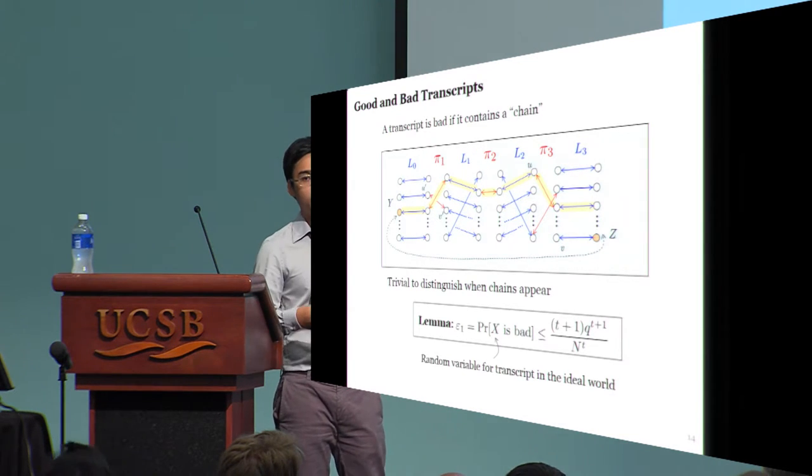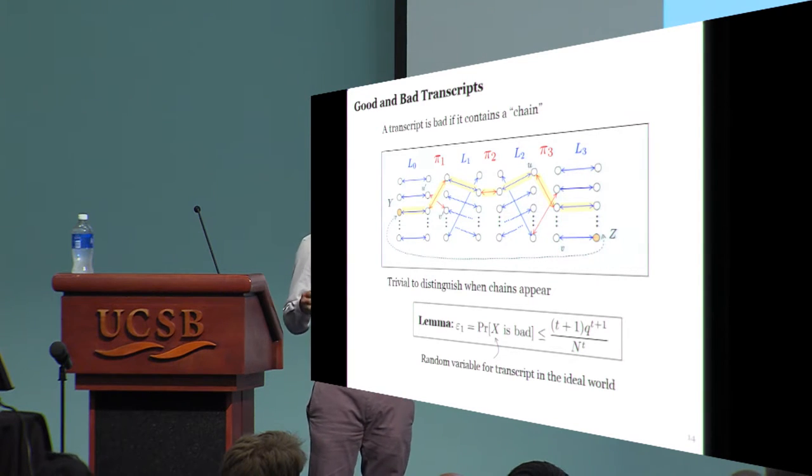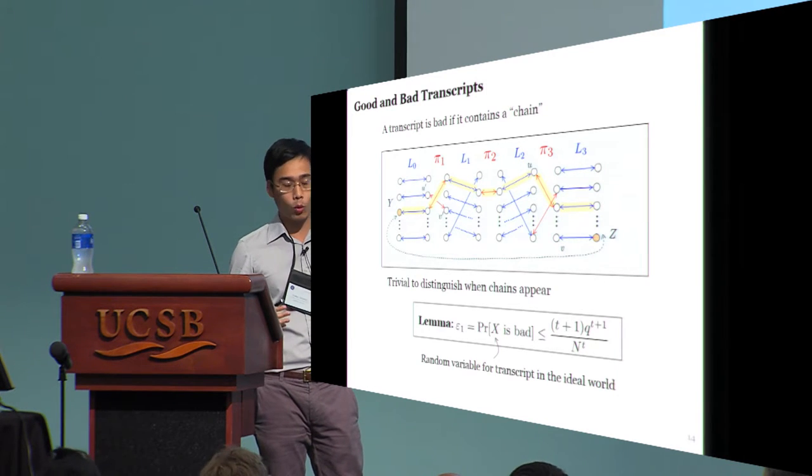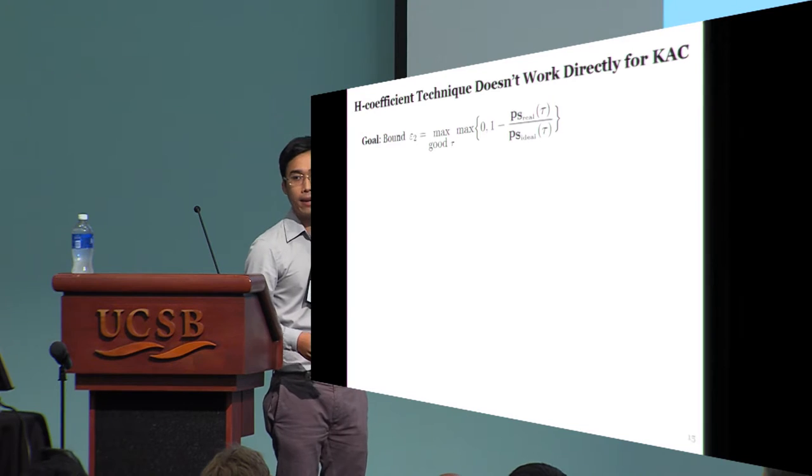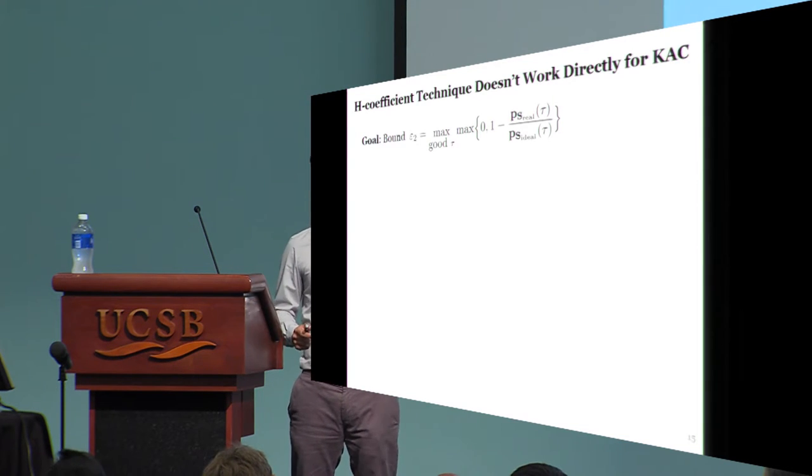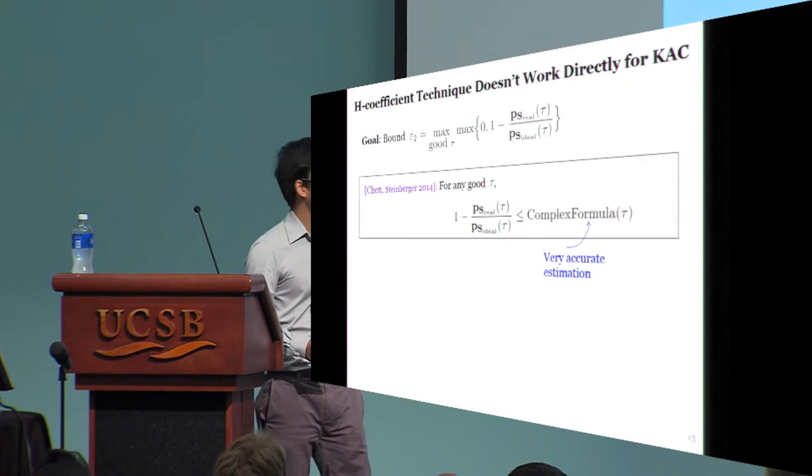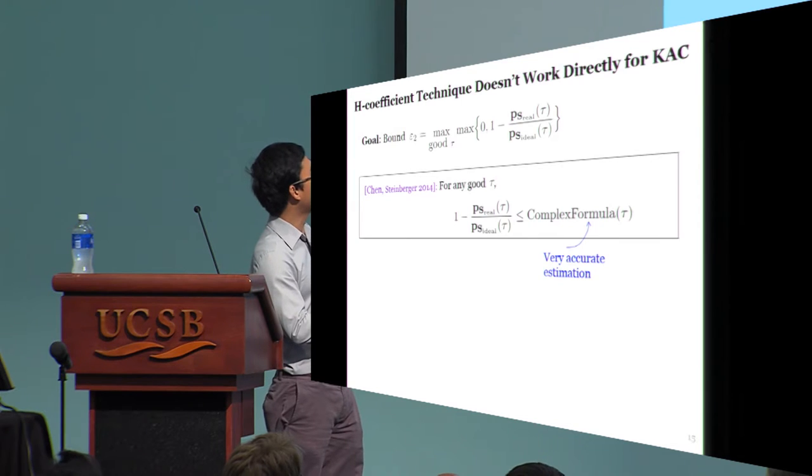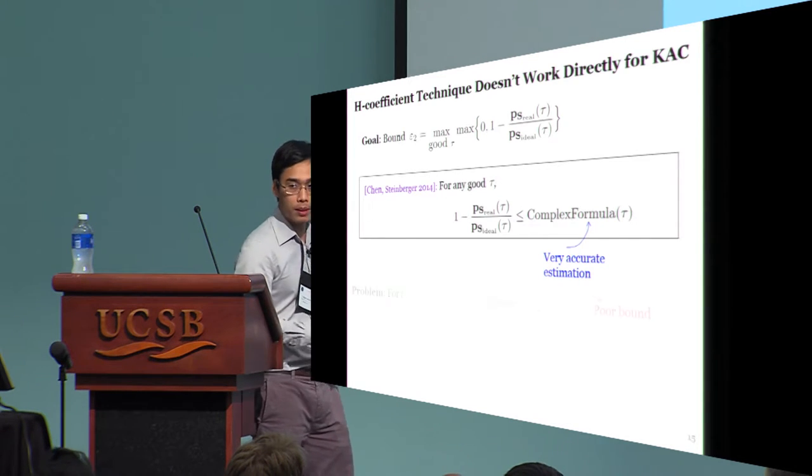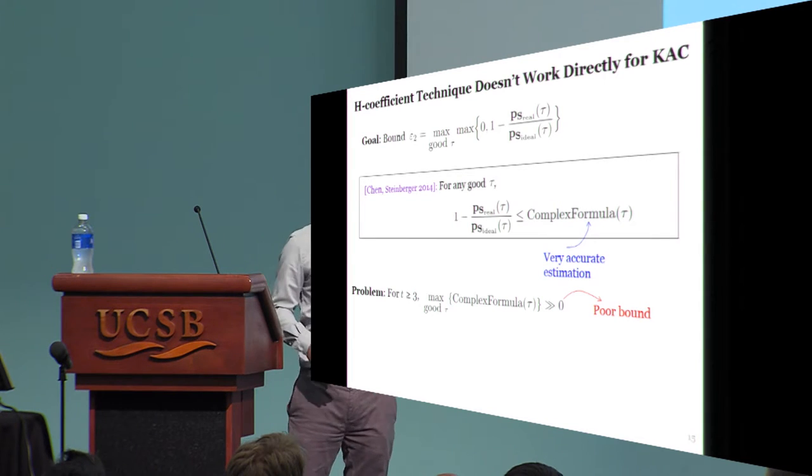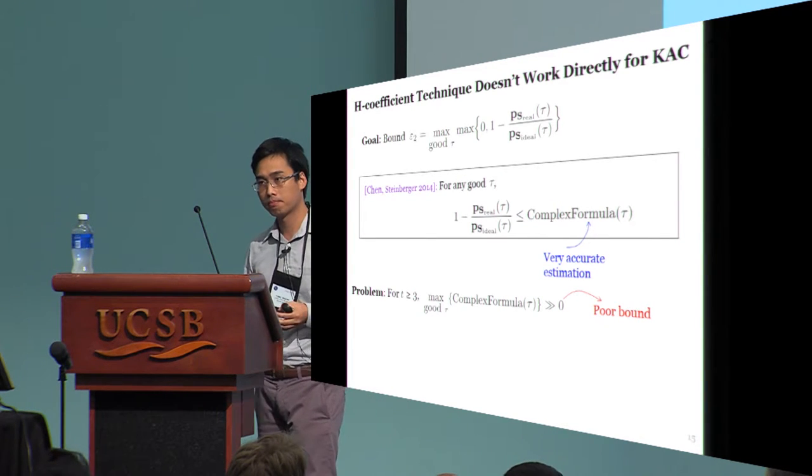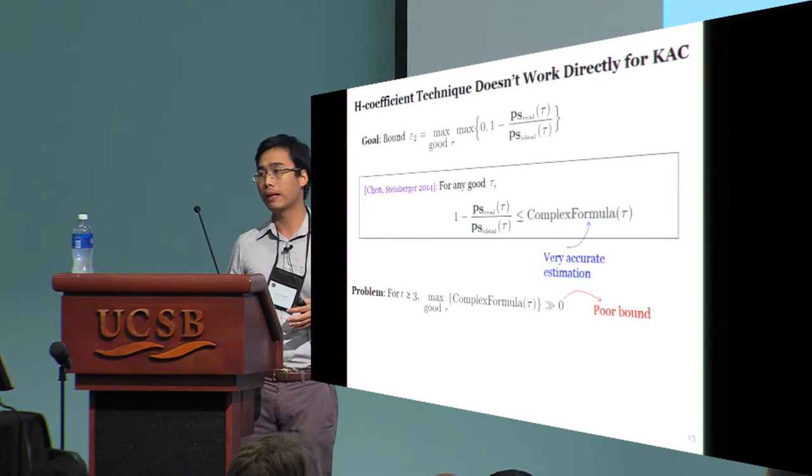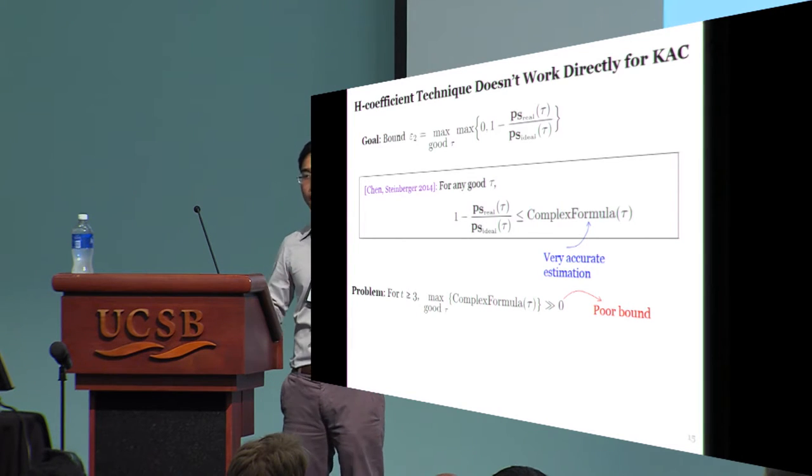Recall that in the H-coefficient technique, you need to bound two numbers, epsilon 1 and epsilon 2. In this case, bounding epsilon 1 is quite simple, but bounding the other number proves to be difficult. Chen and Steinberger provide a pretty accurate estimation for the term in epsilon 2, but when you substitute that in the maximum formula, you will end up with a very poor bound. So, Chen and Steinberger tried to get around that by some tricks, but as we saw earlier, the bound is only asymptotically tight.